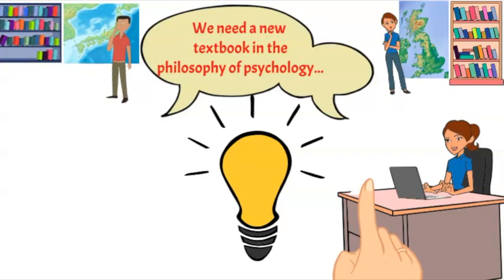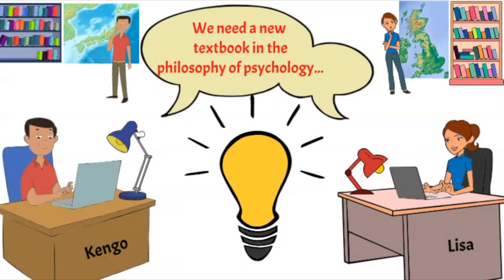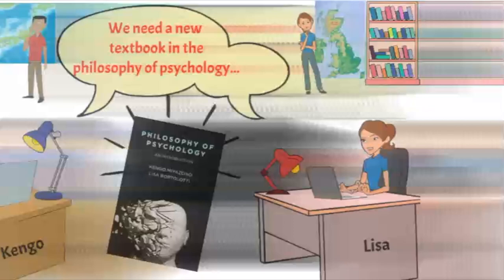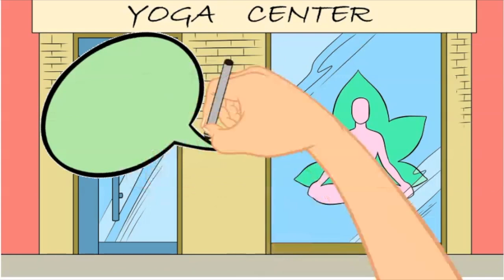Maybe we should write such a textbook ourselves, and maybe we should write it together. So today we've got that book. It's called Philosophy of Psychology and Introduction by Kengo Miazono and myself, Lisa Bortolotti. In the book, we are looking at limitations of human cognitions and human agency.